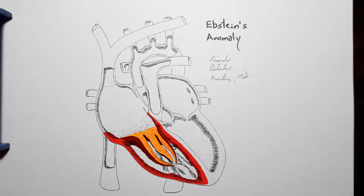If there is a failure of delamination, two of the leaflets may remain adhered to the myocardium, namely the septal and the posterior leaflet.